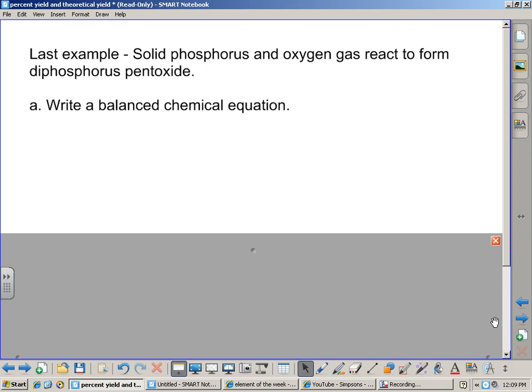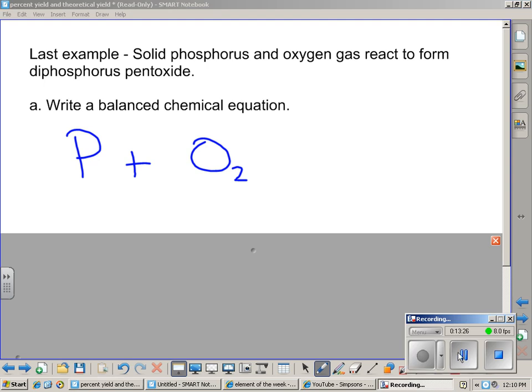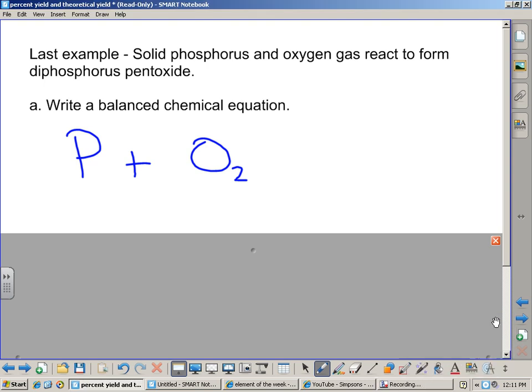All right. So our last example here, we're going to take solid phosphorus and react it with oxygen gas to form diphosphorus pentoxide. Phosphorus is what symbol? P? Okay. Oxygen gas is O2 because it's what? Brinkelhoff. Brinkelhoff, yeah. Okay. All right. We got to talk about Brinkelhoff. All right. So Dr. Brinkelhoff is the abbreviation for all the diatomic elements there. Our product here is going to be diphosphorus, which is how many phosphorus? 2 and pentoxide is 5 there.